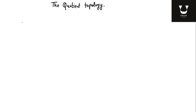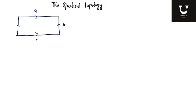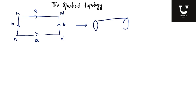We know one very useful technique: the cut-and-paste technique, which we use to construct various geometrical objects. For example, if I have a rectangle with length a and breadth b, and I label the edges m, m', n, n', then if I paste m with n and m' with n', I get a cylinder. If I then paste one end of this cylinder to the other end, I get a geometrical object that looks like a donut, also called a torus.